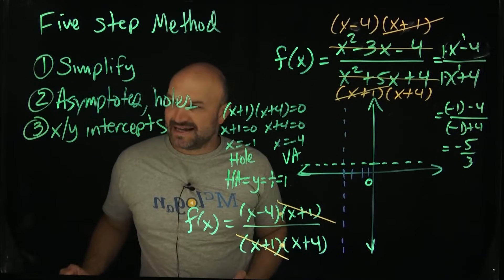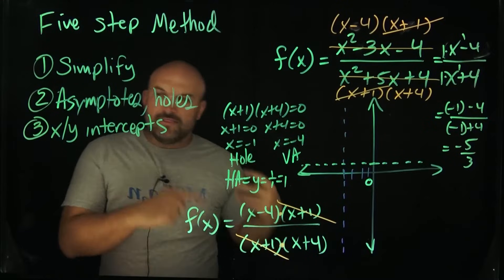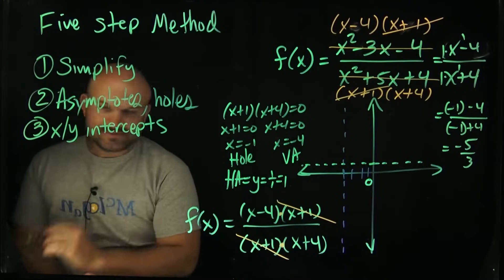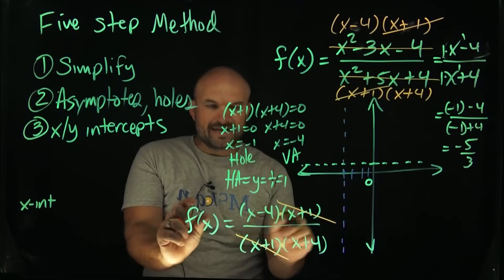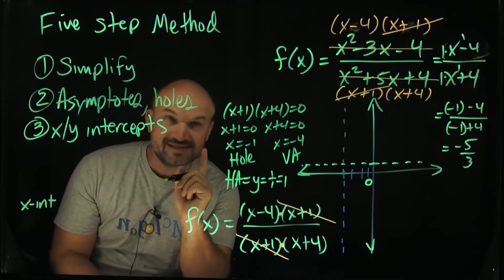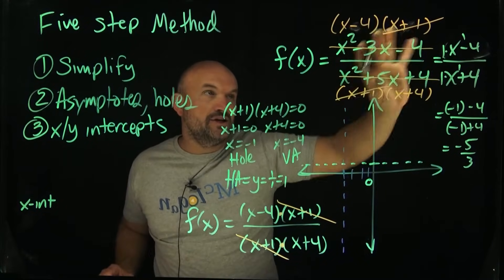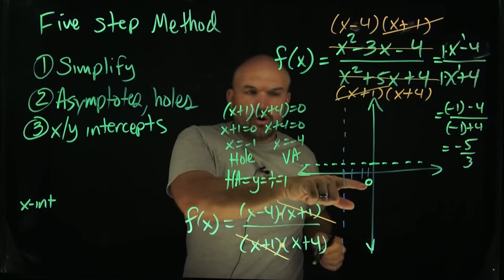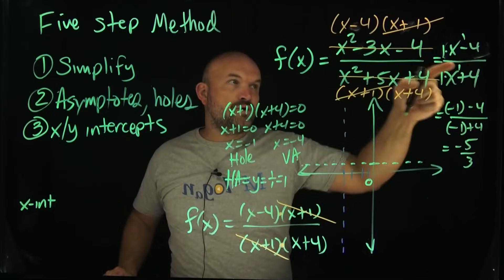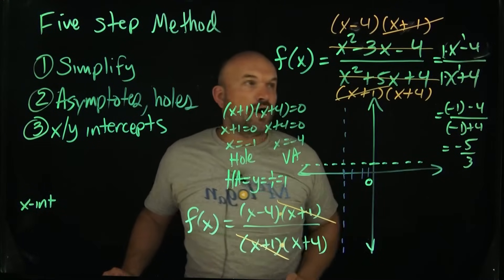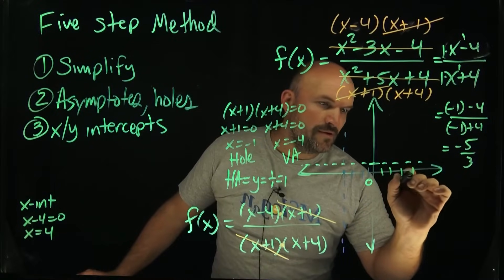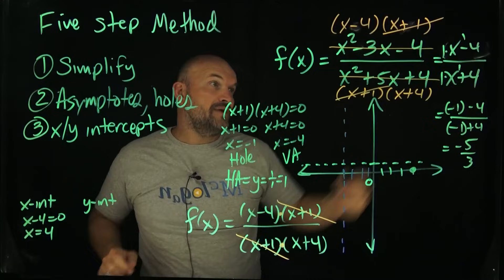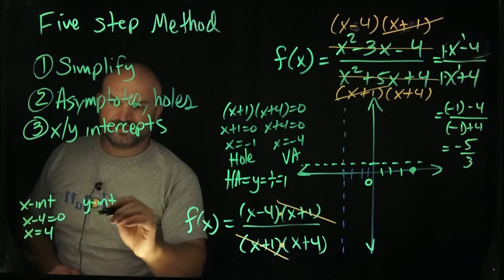The next step is to identify the intercepts. The x-intercept is when y = 0 and the y-intercept is when x = 0. For rational expressions, there's a trick: to find the x-intercept, simply set the numerator equal to zero — that gives us x = 4. To find the y-intercept, plug x = 0 into the simplified form: (0 − 4) over (0 + 4) = −1. So the y-intercept is at (0, −1). I'll plot both of those on the graph.